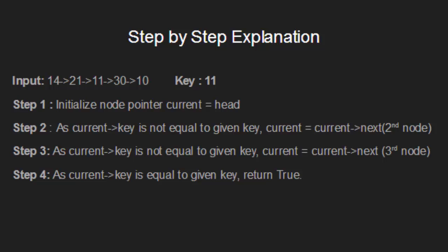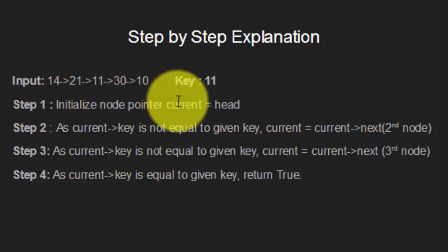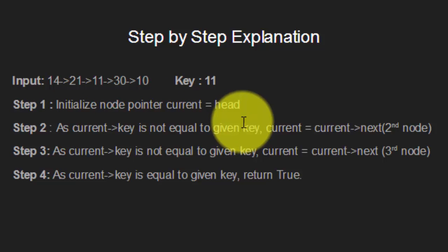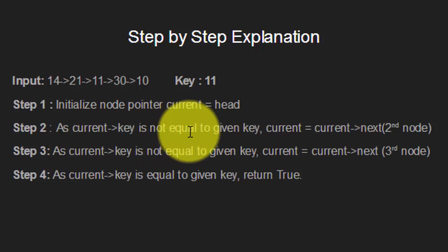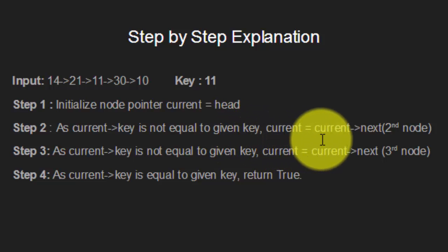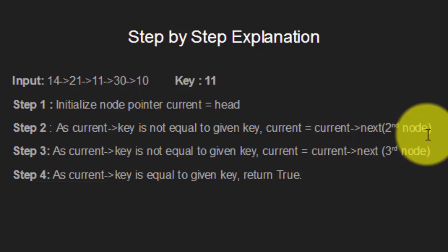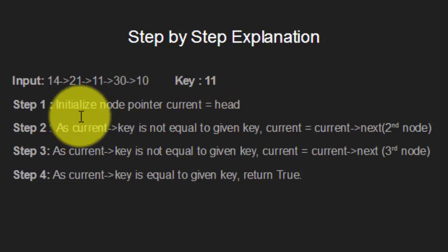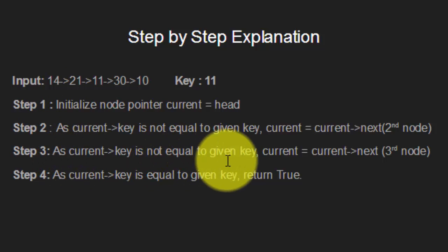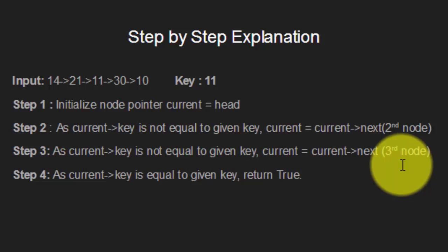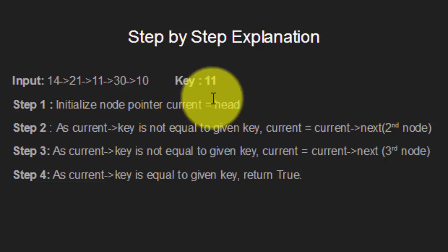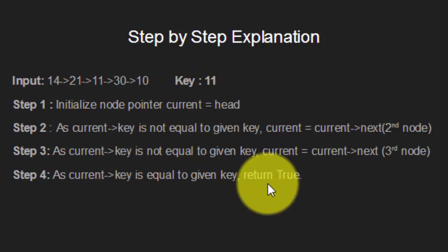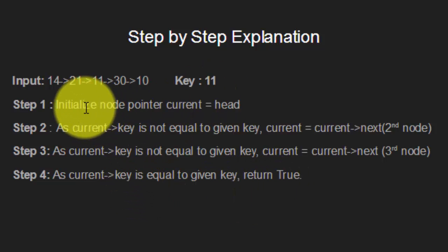Let us now look at the step-by-step explanation of how this algorithm works. Consider the sample linked list as shown here. The key to be searched is 11. First, we initialize a node pointer current to point to the head node. As the key value of the current node is not equal to the given key, we change the pointer current to point to the next node, which is the second node. Again, the key value of this node is not equal to the given key 11, so we change the pointer current to the third node. Now the key value of the third node is 11, which is equal to the given key, so the function will return true.